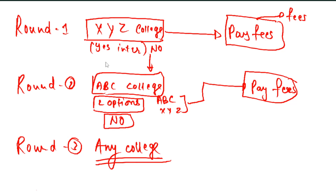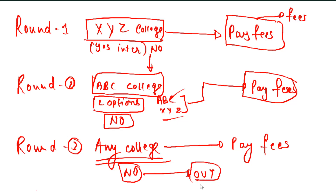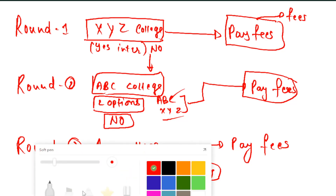So basically, from round one, if you get a good college and are interested, you can pay fees and take admission. If you are waiting for round two and ABC college is allotted but you want a better college, you can wait. But by round three, whatever college is allotted, you must make a decision and pay fees - otherwise you are out of the counseling process.